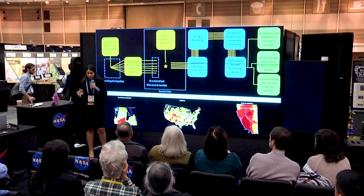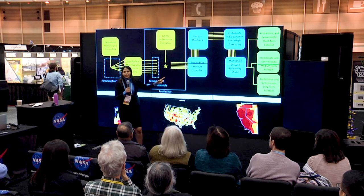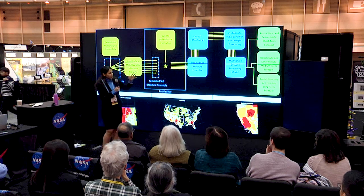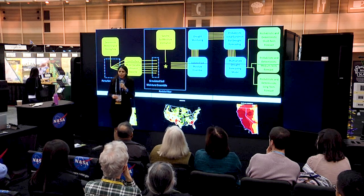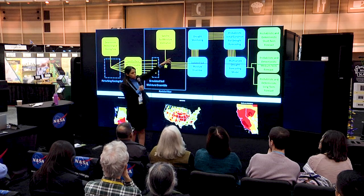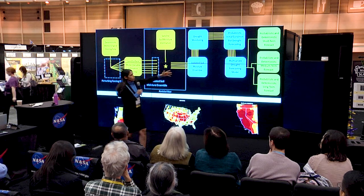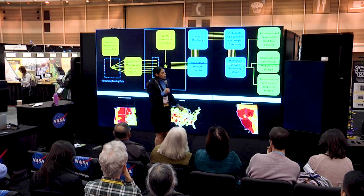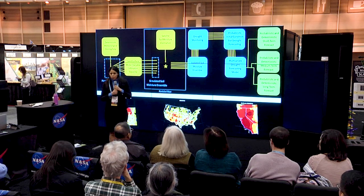With updated soil moisture we can monitor drought — that is the first phase of this project. For the next phase, we use these updated soil moisture estimates to forecast drought using a multivariate statistical model to predict drought given last month's drought. The final products are short-term (one month), medium-term (two months), and long-term (three months) drought forecasts.